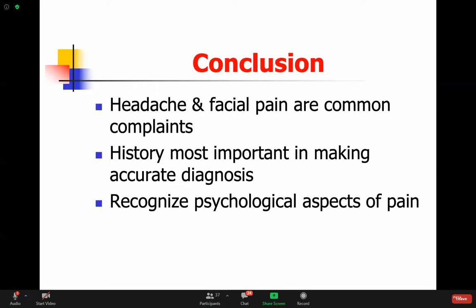Headache and facial pain are common complaints. History is very important for making an accurate diagnosis. You need to identify the dangerous headaches. Number one: headaches related to increased intracranial pressure from a tumor or mass. Number two: headaches in the elderly - could be a tumor or temporal arteritis. Number three: IIH - increased intracranial hypertension in young obese women, which can lead to blindness from chronic papilledema. Number four: spontaneous severe sudden onset headache - a concern for subarachnoid hemorrhage, possibly from an aneurysm.